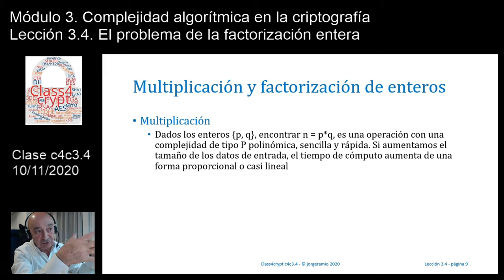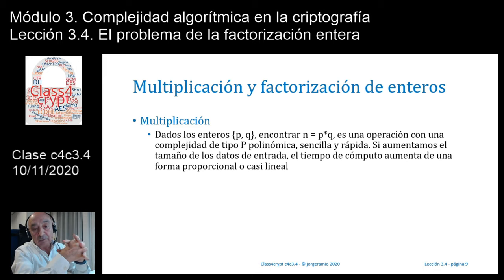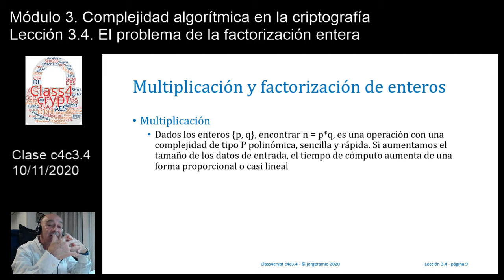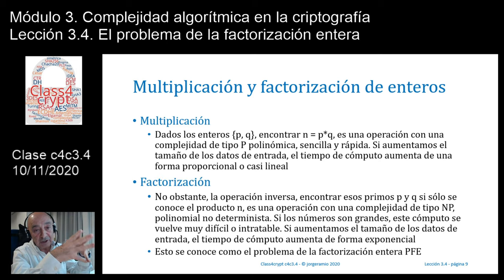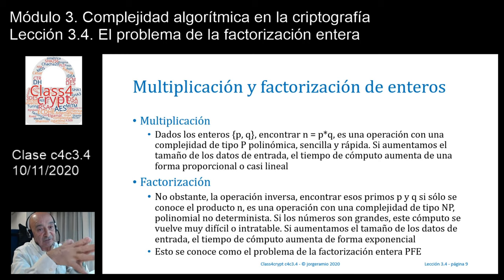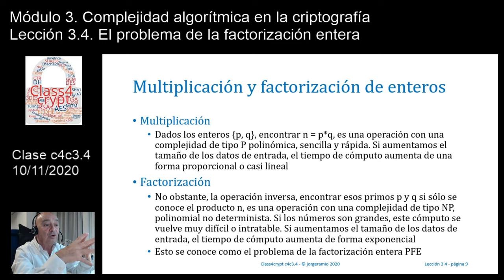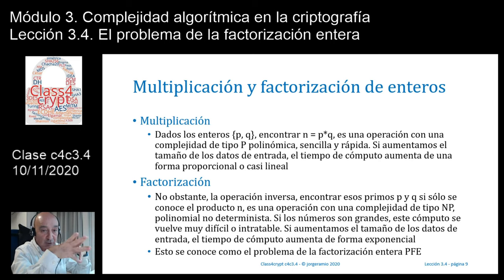La multiplicación de dos enteros, en este caso dos primos P y Q, para encontrar su producto es una operación muy sencilla, rápida, con complejidad del tipo P, es decir polinomial. Si aumentamos el tamaño de los datos de entrada, el tiempo de cómputo aumentará de forma proporcional, casi lineal. Por el contrario, la solución inversa: conociendo el producto N, intentar saber cuáles son los factores P y Q, tendrá una complejidad del tipo NP, es decir polinomial no determinista. Para números grandes de más de 1000 o 2000 bits, es completamente intratable.